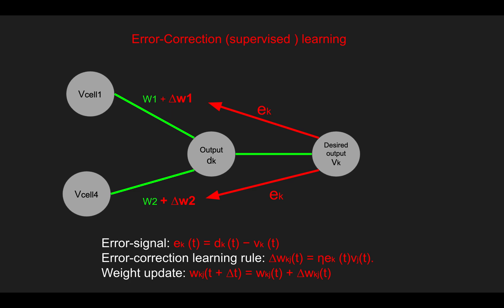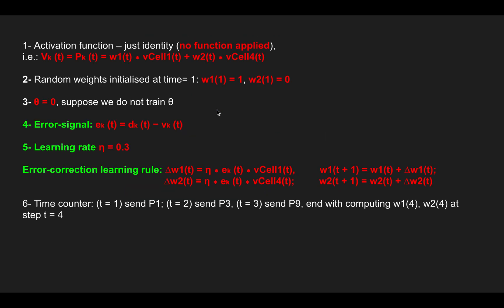Because this is supervised learning, we are going to use the error correction algorithm to recalculate our weights. What it does is compare the system output to the desired output, and then use the error to redirect the training. The error value will be used to adjust the weights using algorithms such as back propagation. These are the rules we have about the error correction learning rule.